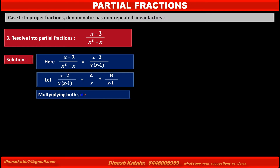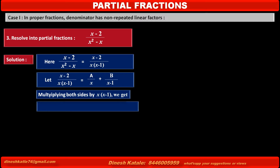Multiplying both sides by x(x minus 1), which is the denominator of the given fraction, the left hand side becomes x minus 2. The first term on the right hand side becomes a(x minus 1), and the second term becomes b·x. Consider this as equation 1.